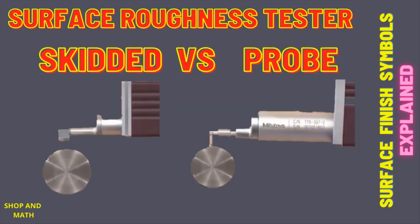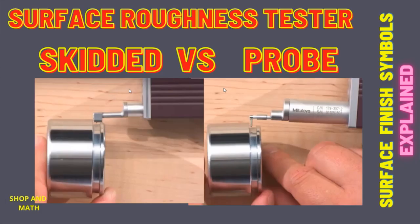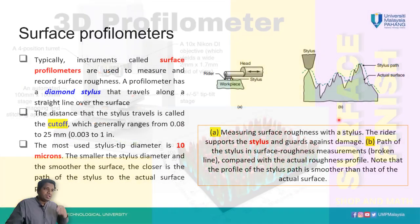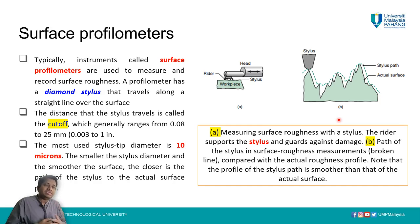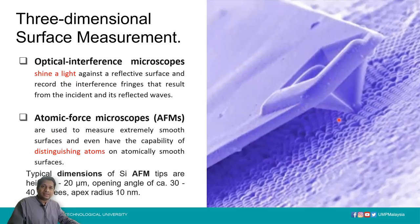Checking the surface finish of a circular object is not possible with a skidded style but is possible with a probe. Checking the surface finish of a groove may not be possible with a skidded stylus due to space constraints compared to a probe. If you want to increase accuracy to micron, 100 nanometer, 10 nanometer, or even atomic levels, additional surface roughness measurement machines are available.